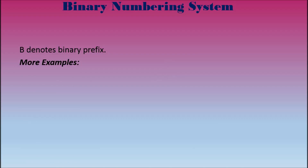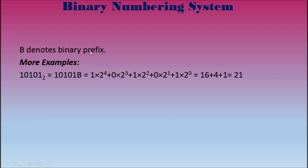Also, if we have a number with a subscript 2 or a 'B' at the end, it denotes a binary prefix. For example, 10101 with a subscript 2 indicates base 2 — it is not the decimal 10,101. It is a binary number, the same as writing 10101B. The subscript 2 and the B suffix are interchangeable. For this example, 1 times 2 to the power of 4, plus 0 times 2 to the power of 3, plus 1 times 2 to the power of 2, plus 0 times 2 to the power of 1, plus 1 times 2 to the power of 0, equals 16 plus 4 plus 1, which is 21.